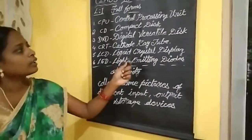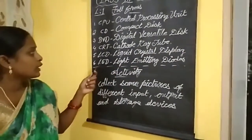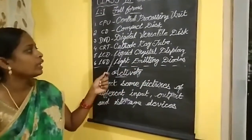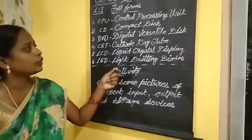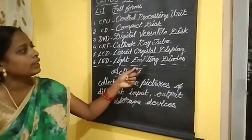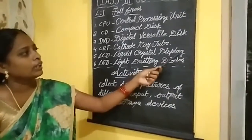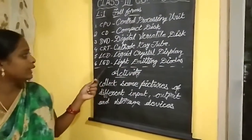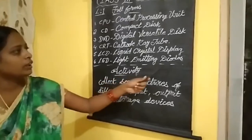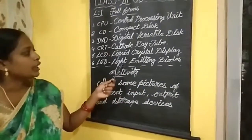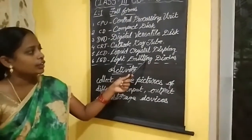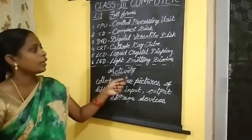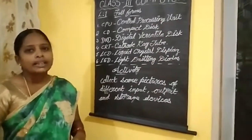Next one is LCD: Liquid Crystal Display — L-I-Q-U-I-D, liquid; C-R-Y-S-T-A-L, crystal; D-I-S-P-L-A-Y, display. Liquid Crystal Display. Next, LED: Light Emitting Diodes — L-I-G-H-T, light; E-M-I-T-T-I-N-G, emitting; D-I-O-D-E-S, diodes. Light Emitting Diodes.